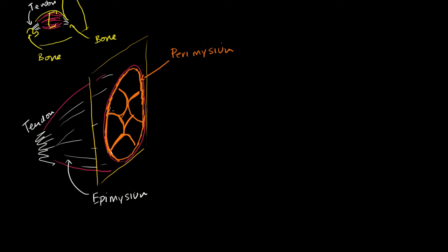Each of these things that the perimysium is dividing off — if we were to pull one of them out — you have the perimysium surrounding it. It's just a fancy word for connective tissue. And there's other stuff in there: you could have nerves and capillaries, all sorts of things, because you have to get blood and neuronal signals to your muscles eventually.